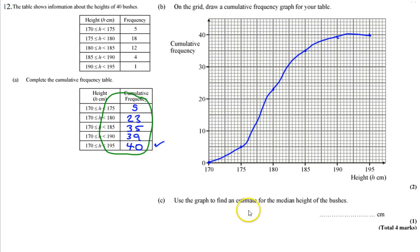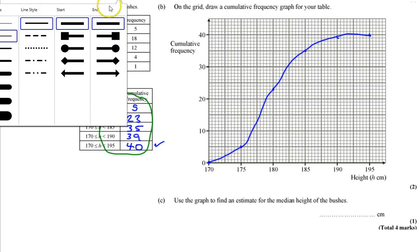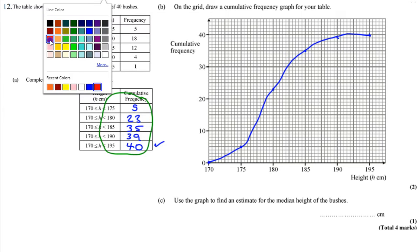Part C says use the graph to find an estimate for the median heights of the bushes. Now we're estimating the median. So I want to go and find my 20th bush, which is going to be here. I chose my 20th because it's half of 40.